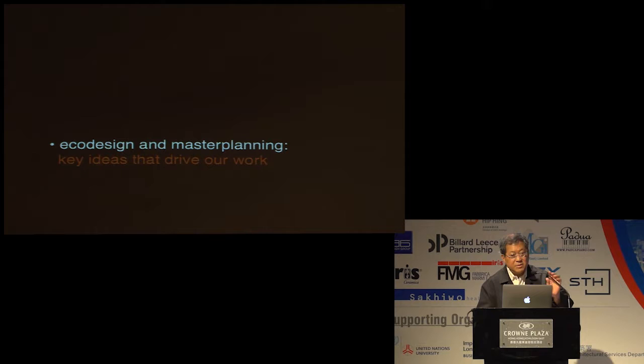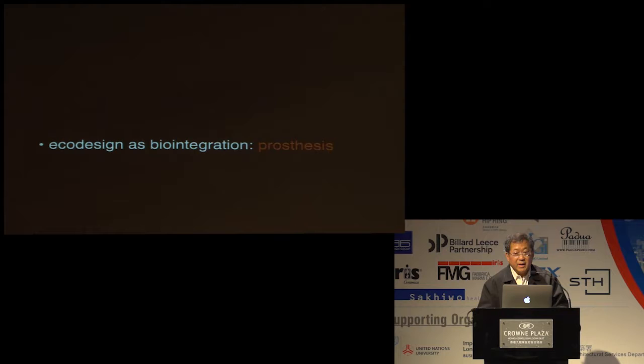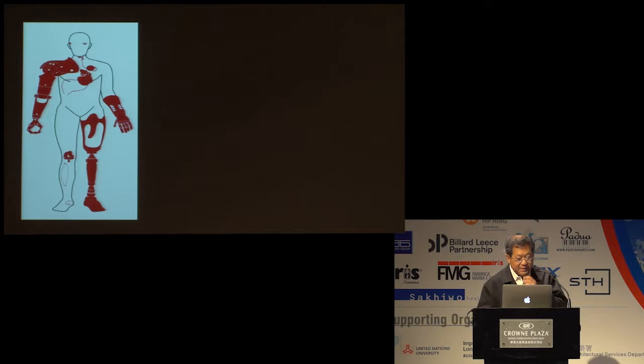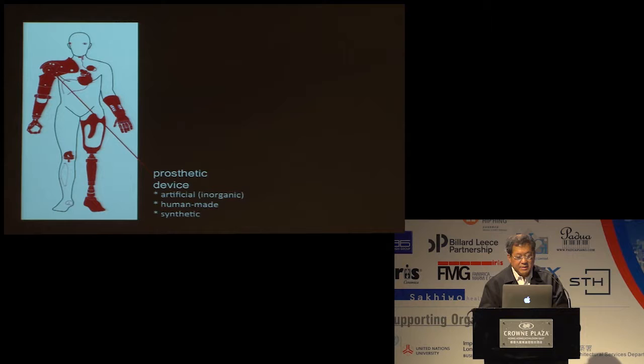I'm going to talk about the key ideas that drive our work on ecological design and master planning. And in many ways, what we do is very similar to what doctors and surgeons do with prosthesis. Here's a poor gentleman with prosthetic devices attached to his body — artificial arm, artificial heart, artificial legs, and artificial kneecaps. The prosthetic device is an artificial, inorganic object which is human-made and synthetic, and it has yet to be attached to a host organism, in this case a human body.